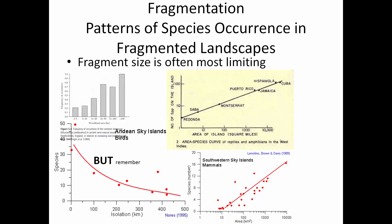Fragment size is often the most limiting factor. In areas greater than 100 hectares, dormice were always found. Larger Caribbean islands had more reptile species. In southwestern Sky Island mammals in Arizona and New Mexico, the number of mammals increases with island size — mountains surrounded by a sea of desert. But remember the effect of distance to mainland: even a large patch, if too isolated, may have fewer and fewer species.